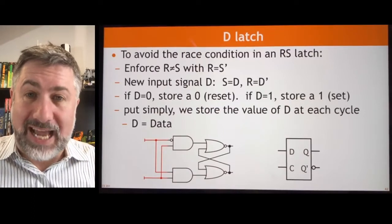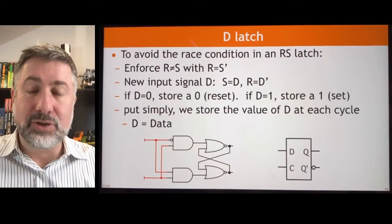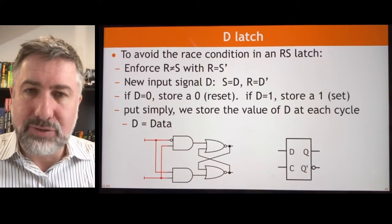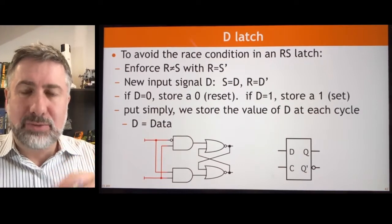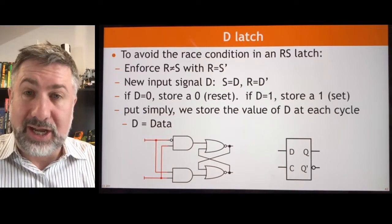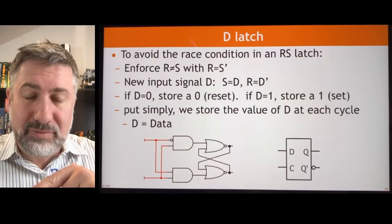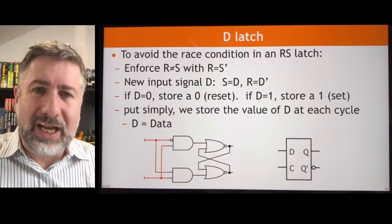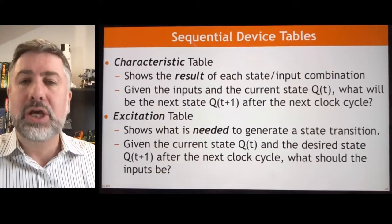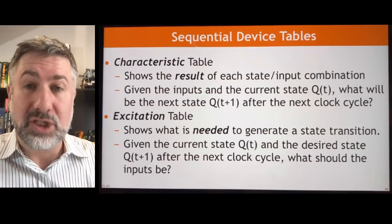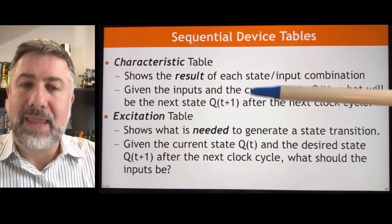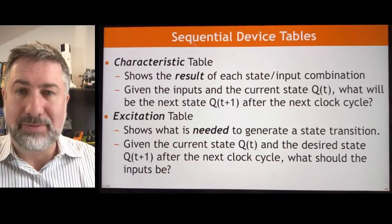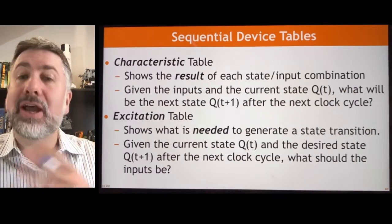We've built an RS latch and a D latch. These are two fundamental sequential devices that allow us to store and retrieve information. If we're going to use them to construct sequential circuits with control over what we store and when, we need specific ways to describe them. We're going to use two different kinds of tables: characteristic tables and excitation tables. I'll walk through what these both do, then show you each for the RS latch and the D latch.